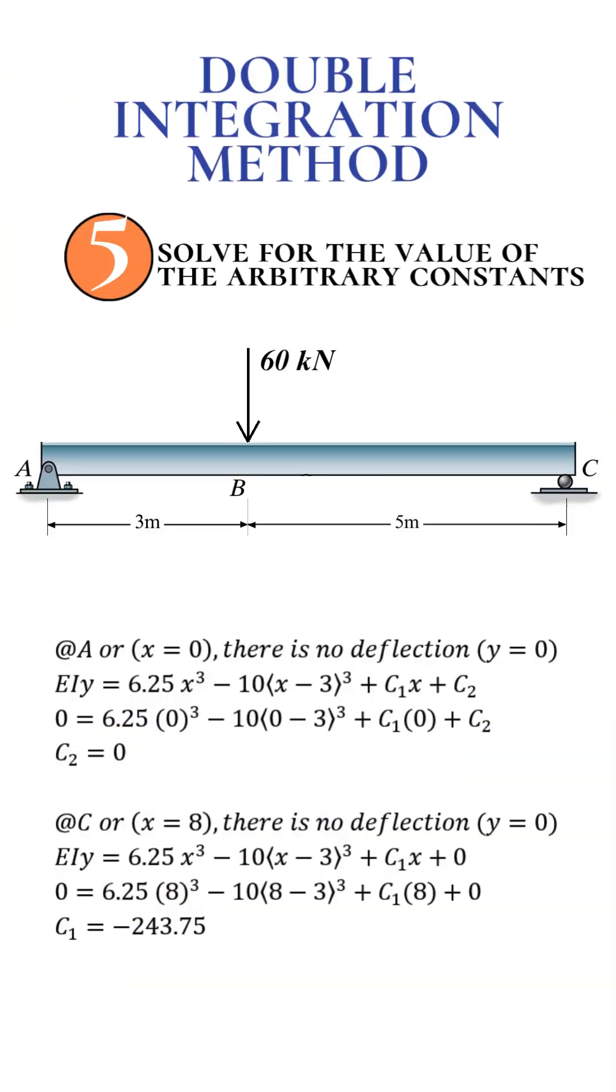Step 5: Apply boundary conditions to solve for constants. Use known deflection conditions at the supports. At point A, X equals 0, the beam is pinned, so deflection Y equals 0 gives us C2 equals 0.